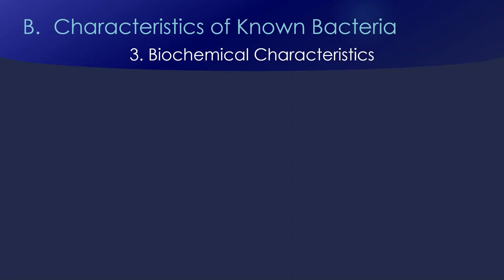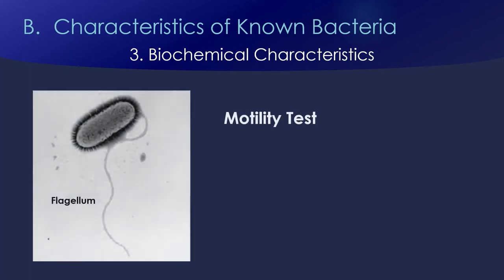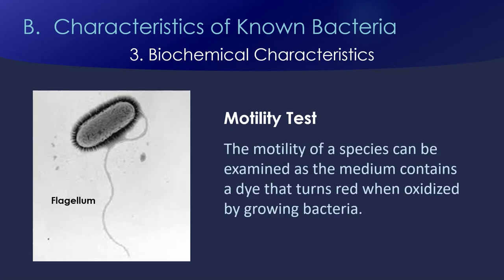The next step is to characterize our known bacteria using biochemical tests. The first test is a motility test — looking to see whether these organisms can swim and move around, in other words whether they have a flagellum or some other mechanism of motility. Basically the way the test works is there's a dye in some medium, and when the bacteria move around they oxidize the dye and it turns red, so you'll see lots of red in a positive test.